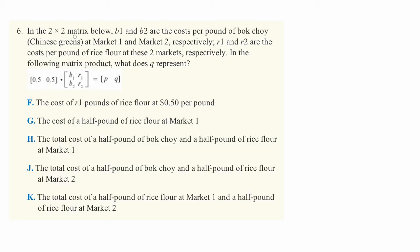In the 2x2 matrix below, B1 and B2 are the cost per pound of bok choy, that's these two numbers here, at market 1 and market 2 respectively.